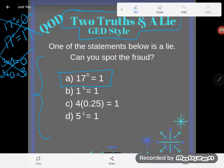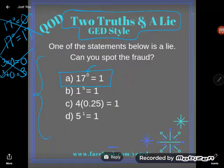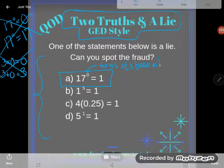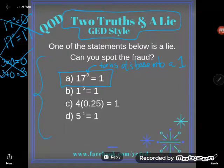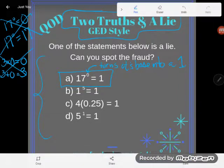By definition, meaning we've defined, mathematicians have defined it to be so, the zero power turns its base into a one. Now there is a real reason for this. I'm not going to get into it today. I think I even have another video on this very topic.